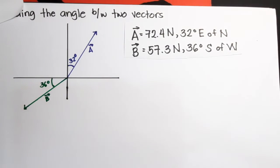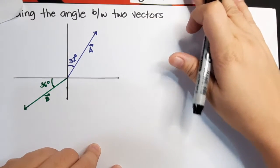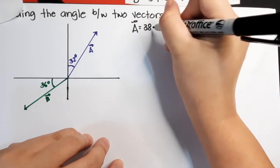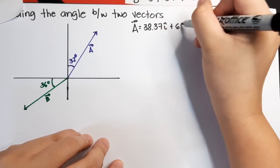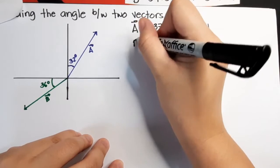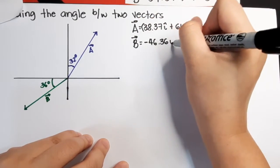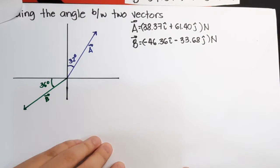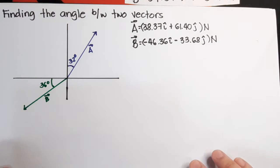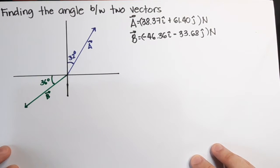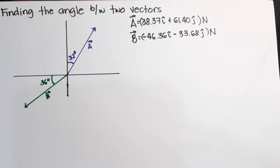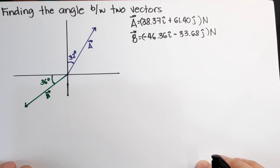But what if the given vectors are in unit vector form? For example, from our previous conversions, this is my vector A. If the given are in unit vectors, we cannot draw this — we cannot determine the 32 degrees and 36 degrees. So one method we can use is to find the angle between two vectors based on the property of unit vectors.